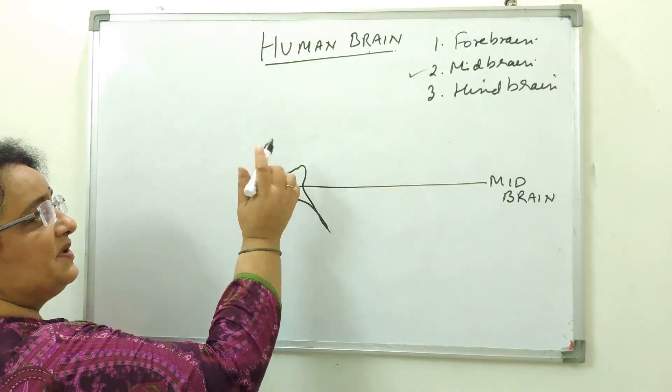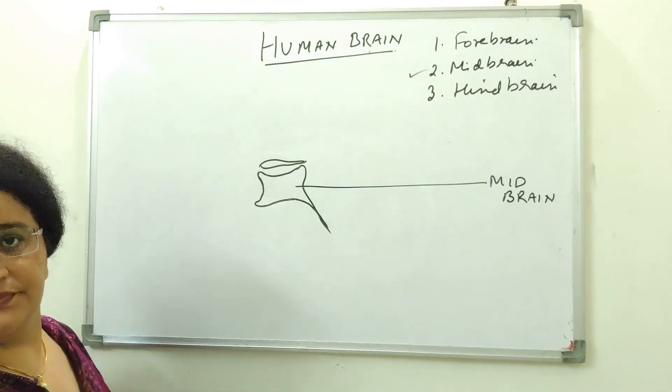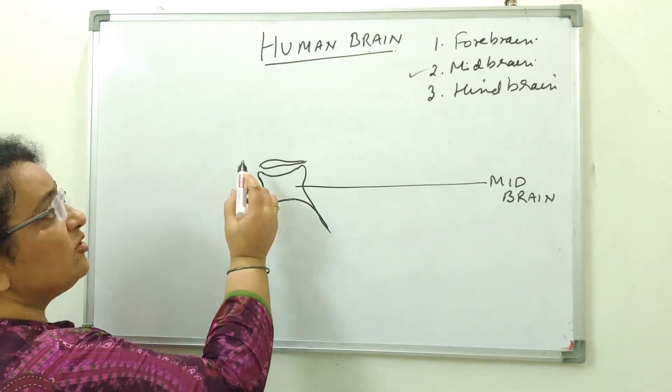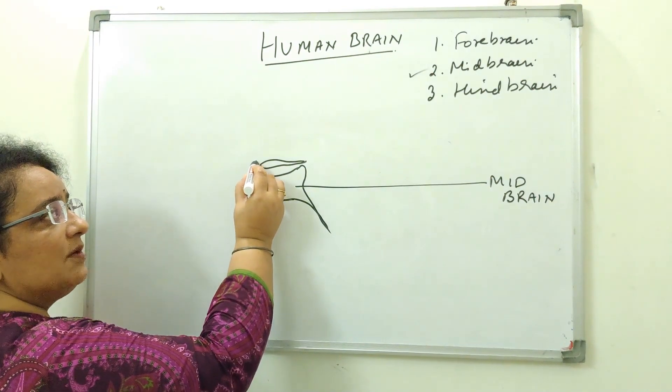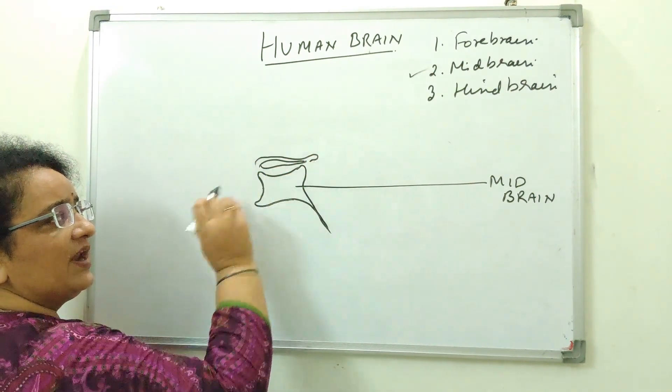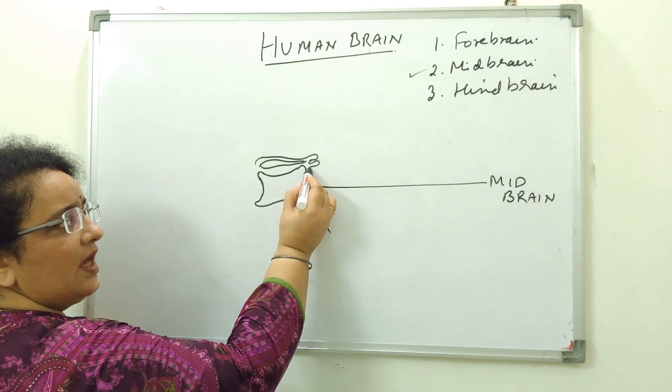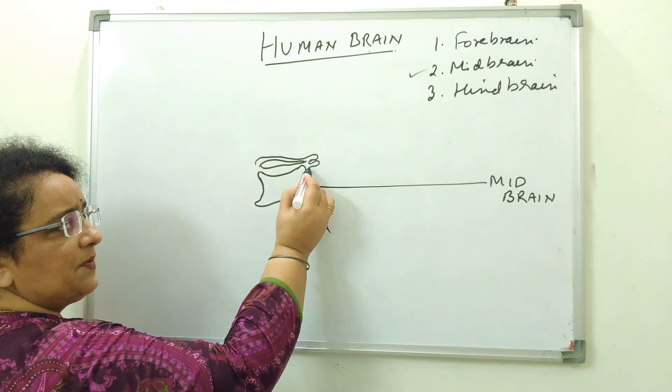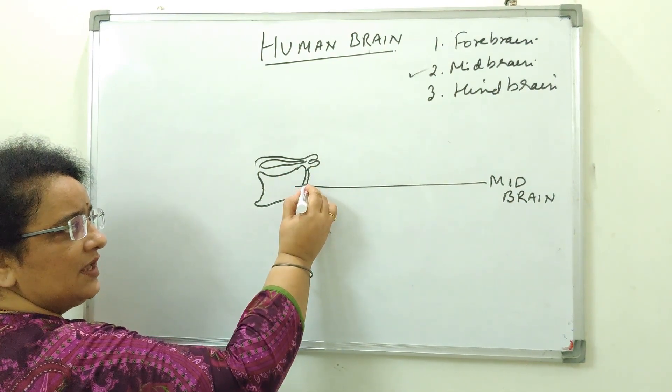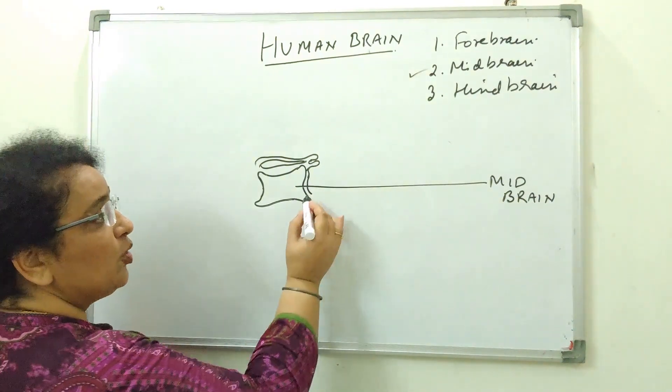About this midbrain you draw a lobe like structure like this and now start moving along the boundary. And here you make one loop, another loop and after that keep coming along with the boundary.